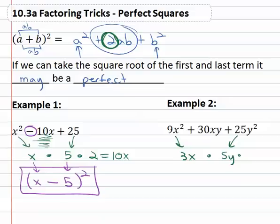If we multiply those by two, always two, three x times five y times two—three times five is fifteen, times two is thirty xy—and sure enough that matches in the middle. We have a perfect square.